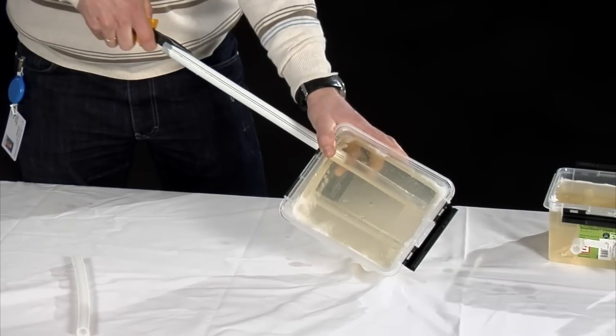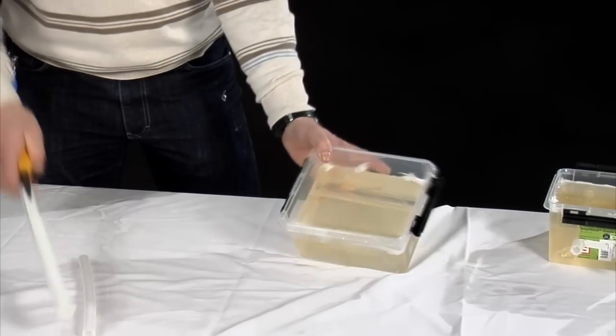Once the model is firm, remove the pipes. You now have a model with two air-filled tunnels resembling vessels.